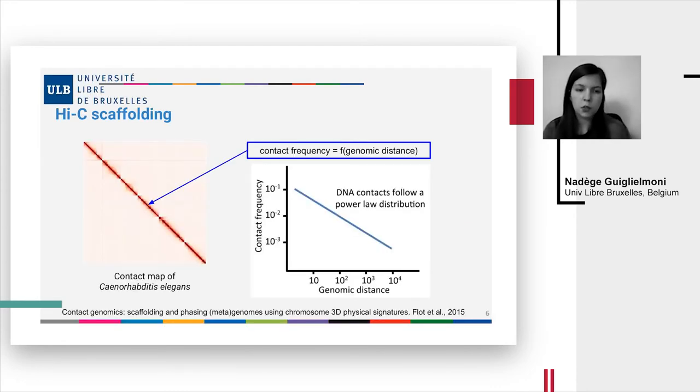Chromosome conformation capture or more specifically Hi-C is one method that can be used for scaffolding based on two principles. First, intrachromosomal contacts are more frequent than interchromosomal contacts. So when you have contigs that have a high interaction frequency together then they likely belong to one chromosome. Second, the contact frequency is a function of the genomic distance, so you can order your contigs based on this information.